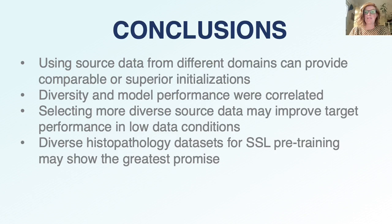In conclusion, we found that using source datasets from different domains can provide comparable or superior initializations when compared to using data from the same target dataset. We also found that diversity and model performance were correlated for most of the tested conditions. This suggests that selecting more diverse source data may improve target performance in low data conditions. And finally, we found that the highest performance was achieved using diverse histopathology datasets for self-supervised pre-training, so this may show the greatest promise.